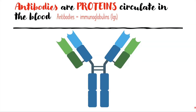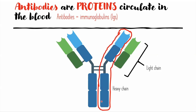Antibodies are shaped like the letter Y. Each antibody is made up of two light chains — this is one and this is another one — and two heavy chains: this one heavy chain and this is another heavy chain.